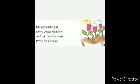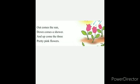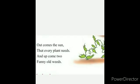Out comes the sun, down comes a shower. This means the sun is coming out and the shower means rain is coming down. And up come the three pretty pink flowers. How many pretty pink flowers came out? Three. Three out of five, only three came out as pretty pink flowers.